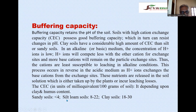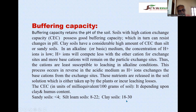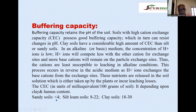CEC depends on clay and humus content. Sandy soil has a CEC of less than 4, silt loam soil is 8 to 22, and clay soil is 18 to 30 meq per 100 g of soil. That is why black soils are more fertile — they contain more clay particles, higher CEC, and greater buffering capacity. In black soil, adding acidic or alkaline fertilizer causes less fluctuation in soil pH. In sandy soil, continuous application of acidic fertilizers like ammonium sulfate or urea will cause pH to change, because it has less buffering capacity.